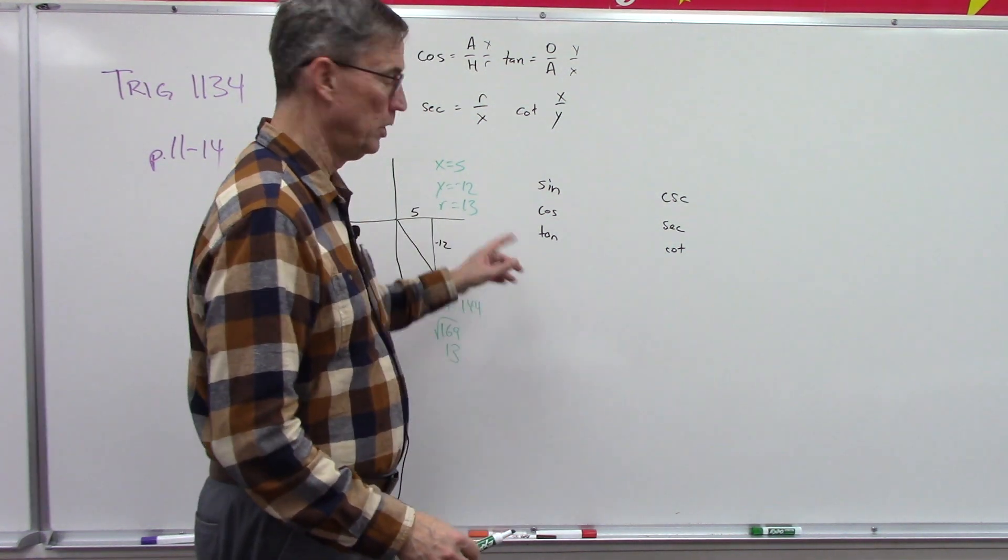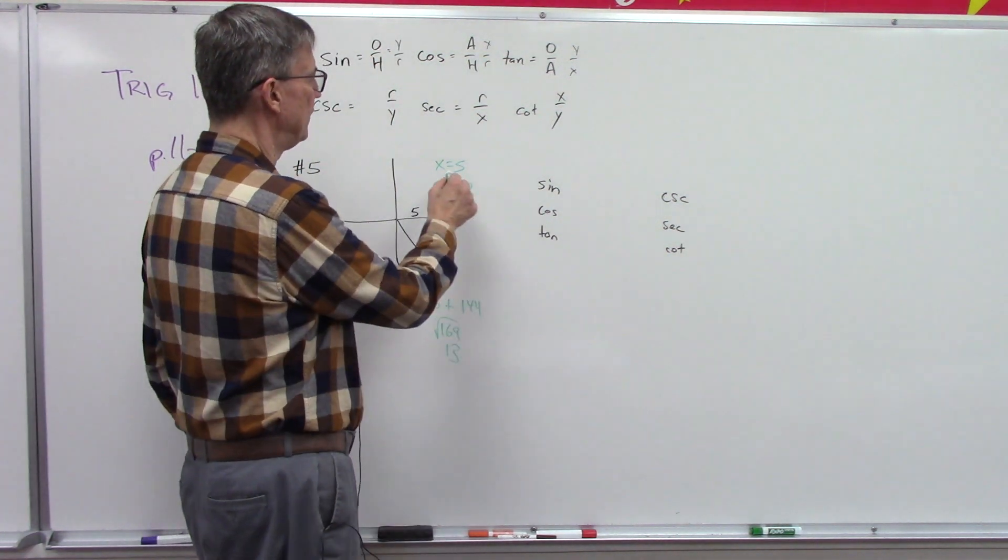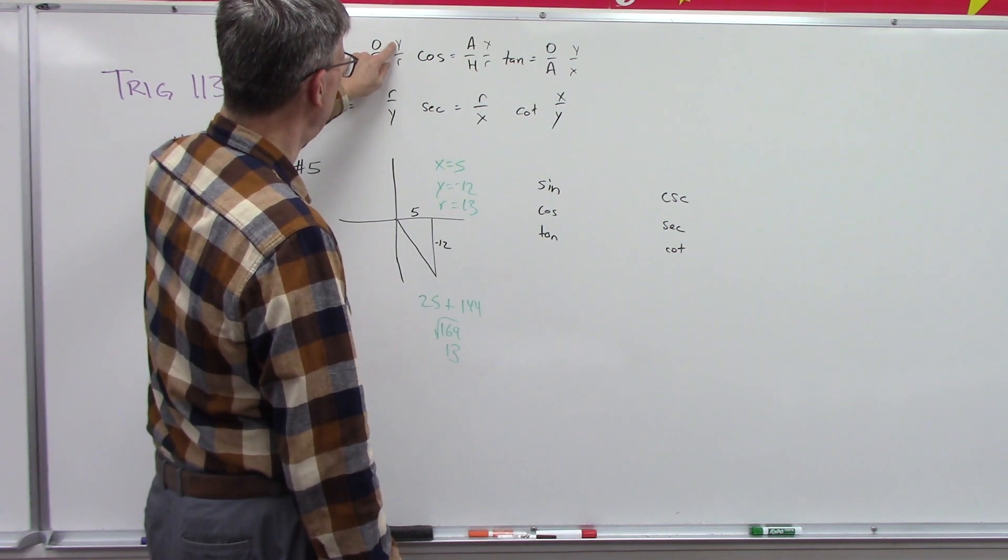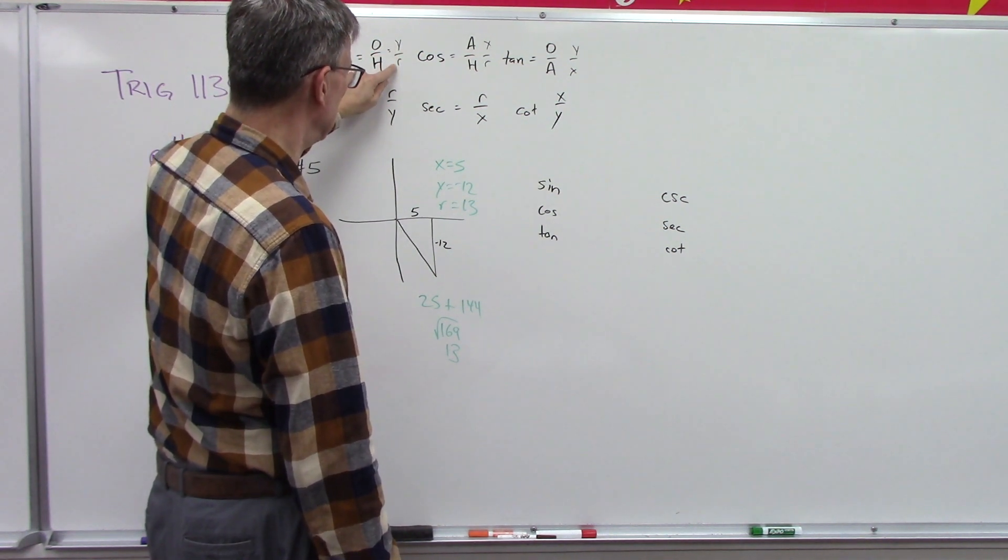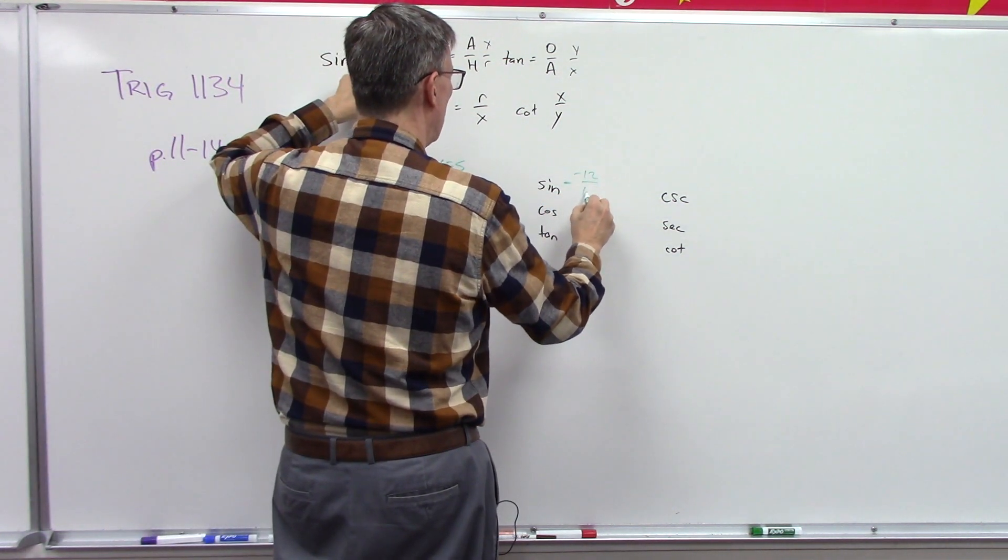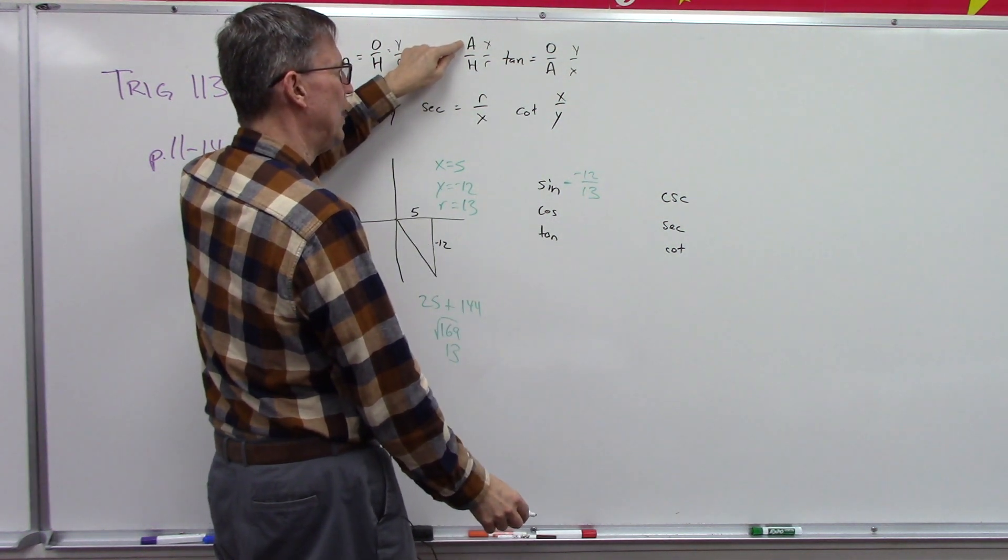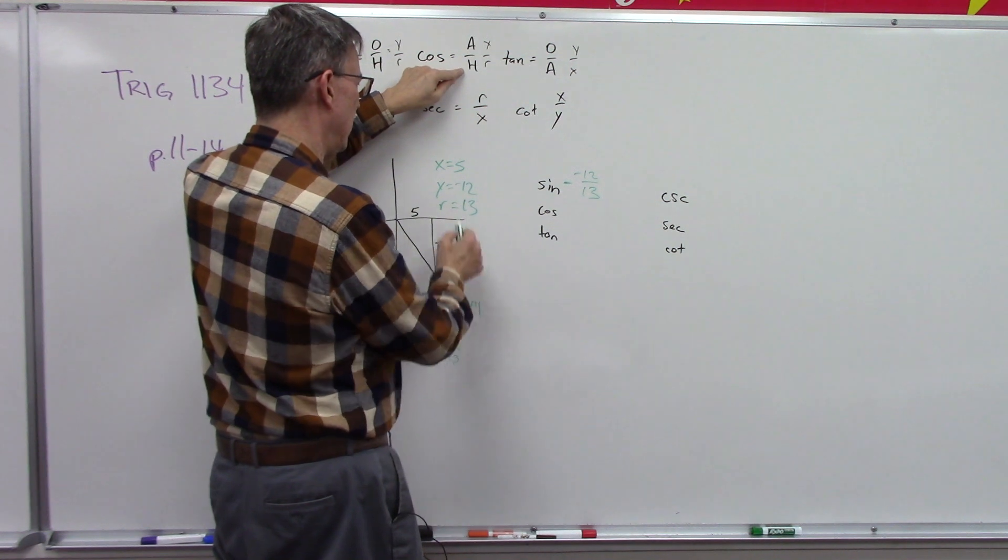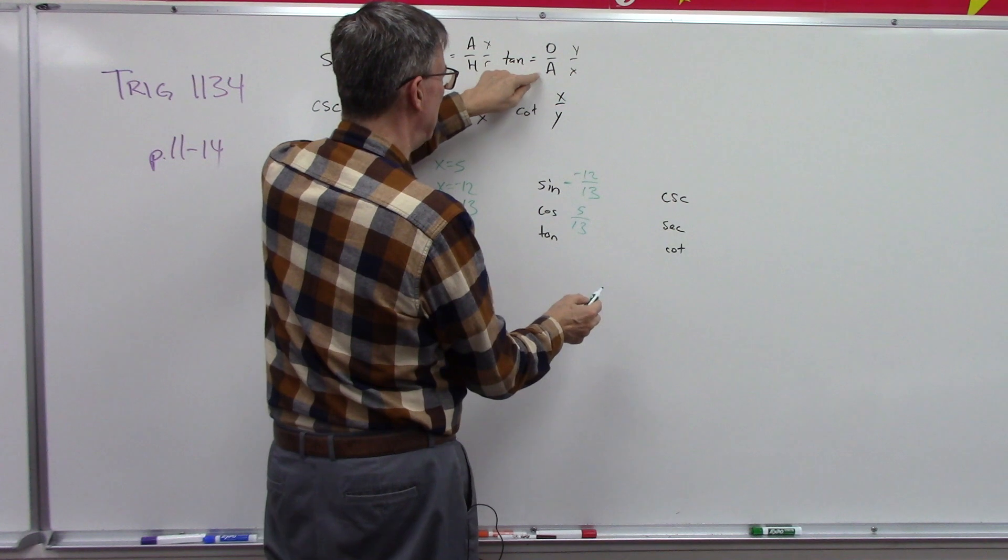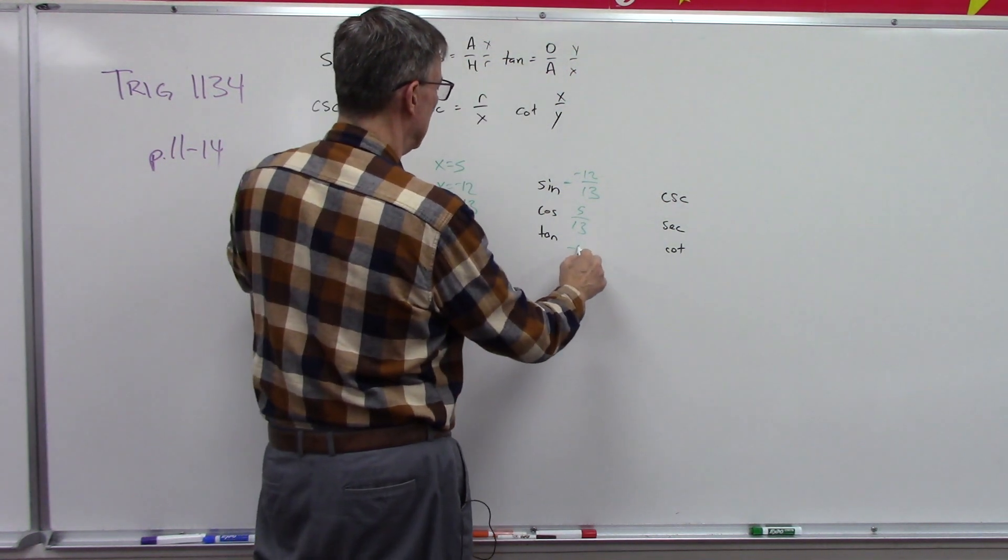So let's figure out what the sine is. Sine is y, which is the opposite, over the radius. So the sine should be negative 12 over 13. The cosine is the adjacent, or the x value, divided by r - well, x is right here, so 5 over 13. And then tangent is going to be y over x, so we're going to do the negative 12 over the 5. Was that easy? That's pretty easy, right?